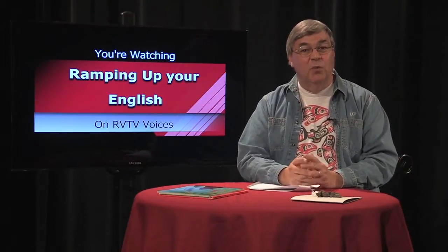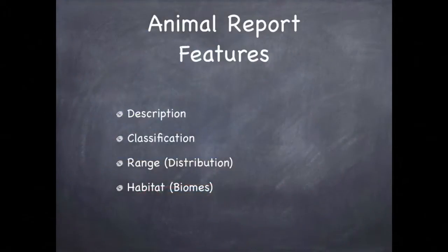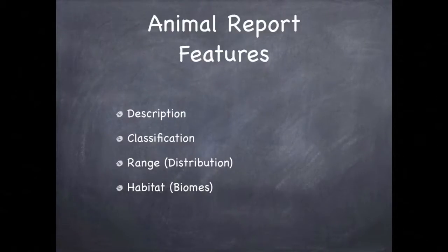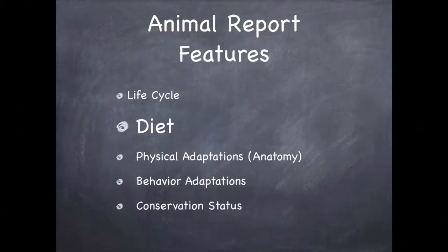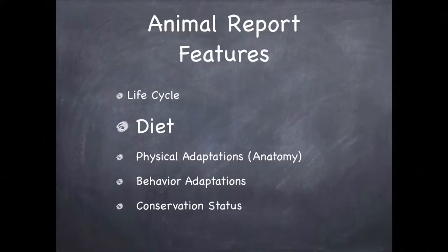Let's review the elements we want in a report you're writing on your chosen animal. We've already covered these elements in previous episodes: describing your animal, showing its classification, explaining where the animal is found, its range and distribution, describing the habitat it needs, and the biomes where this habitat can be found. We just did multiple episodes on life cycle. Today's episode will explore the diet of an animal. We featured diet in our previous episode on African animals, but we have more to learn. We also want to include the subject's physical and behavioral adaptations as well as its conservation status.